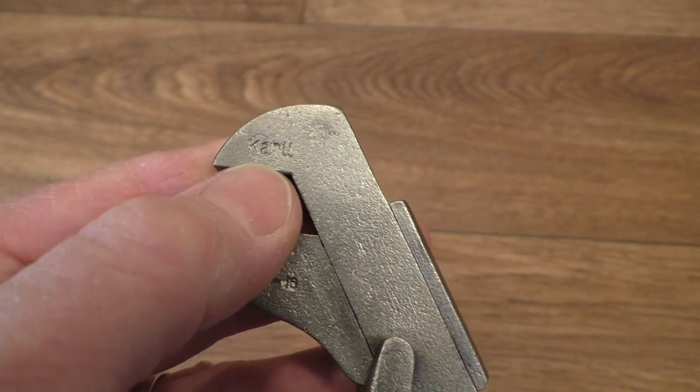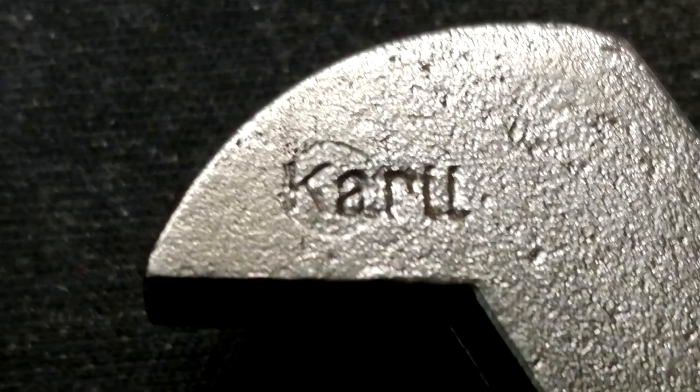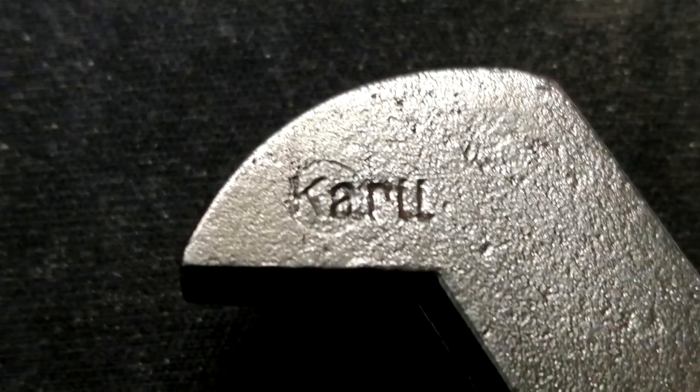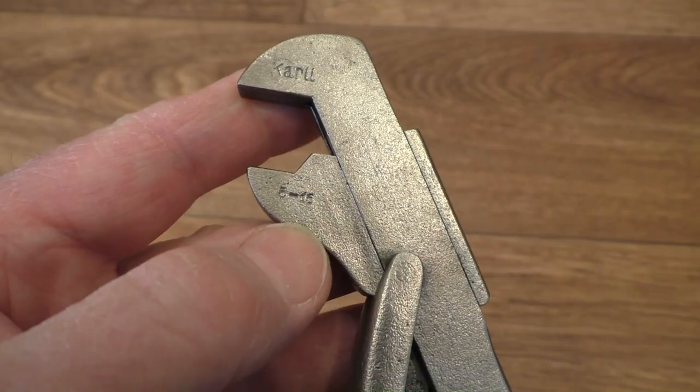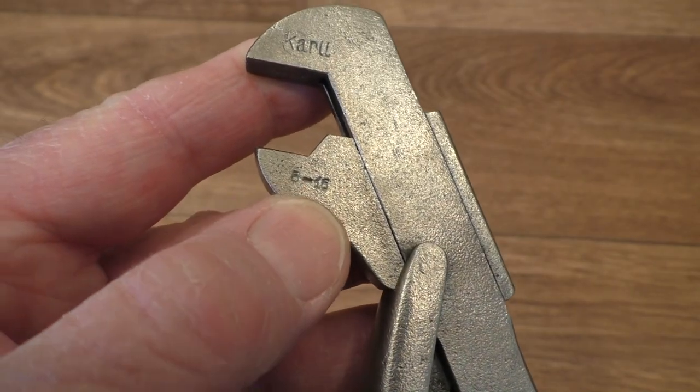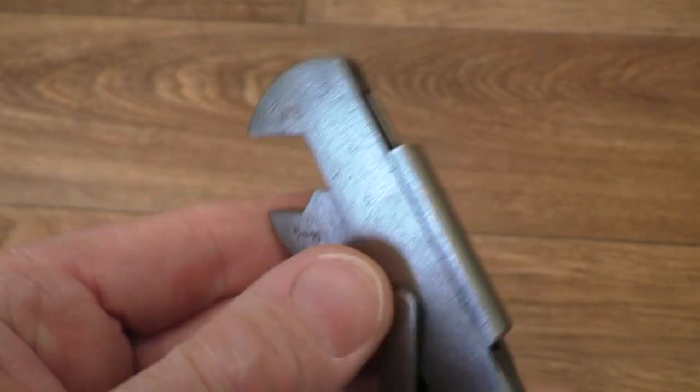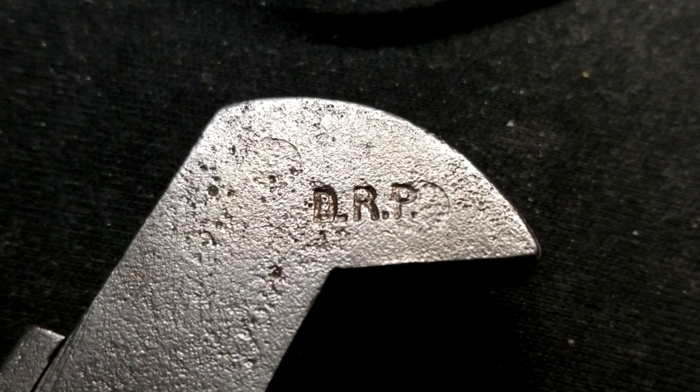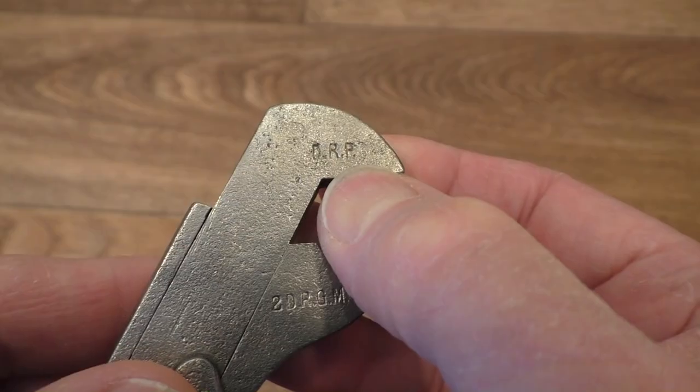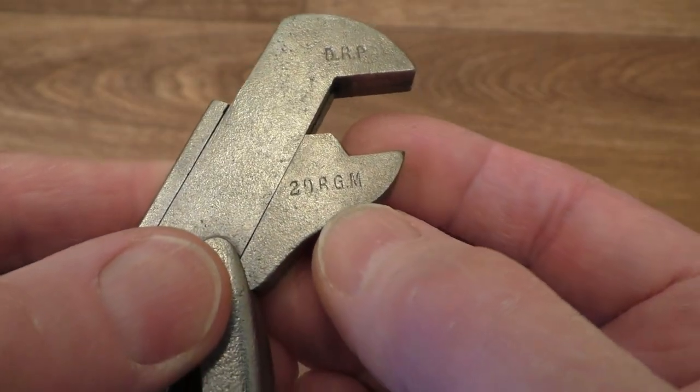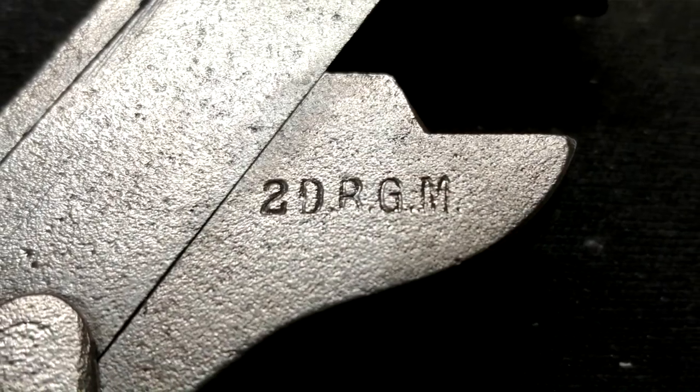We also have some markings here we've got the manufacturer Karoo which I believe is a German company. Underneath that we have as I said the 5 and 16mm, possibly millimeters, who knows. And over this side we have DRP, not sure what that is either, we have DRGM.